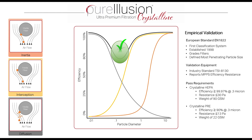Crystalline is validated by a TSI 8130. We perform an empirical validation using the TSI 8130 to provide assurance of the most penetrating particle size captured at an efficiency rate greater than or equal to 99.97% at 0.3 microns, with a resistance less than or equal to 30 pascals on a filter weight of 90 grams per square meter. The Crystalline pre-filter is equally impressive, capturing greater than or equal to 90% efficiency at 0.3 microns with a resistance less than or equal to 13 pascals on a filter weight of 22 grams per square meter.